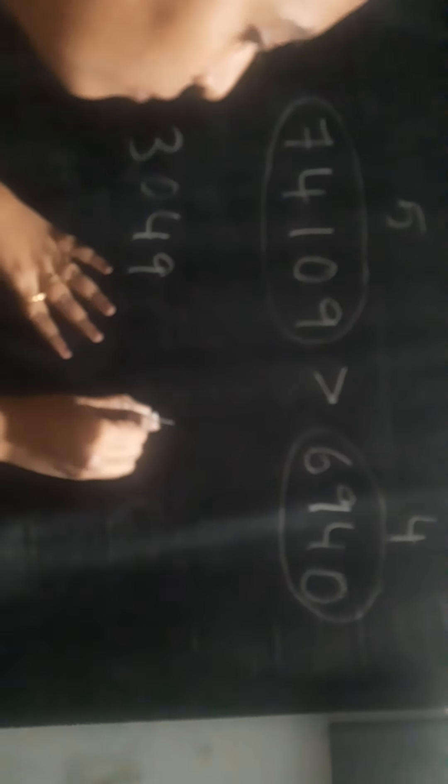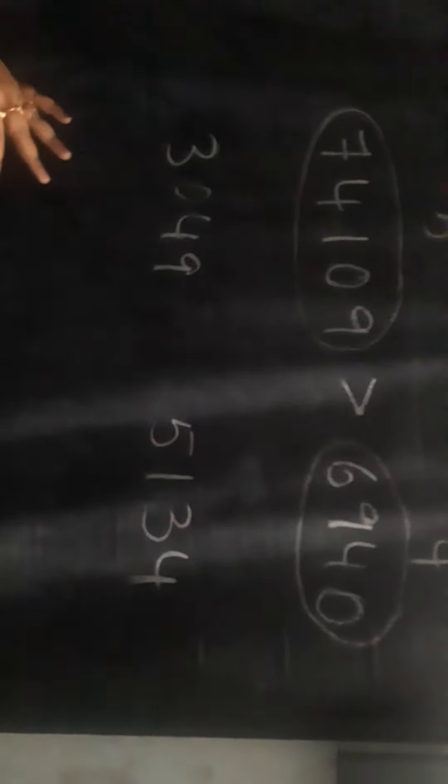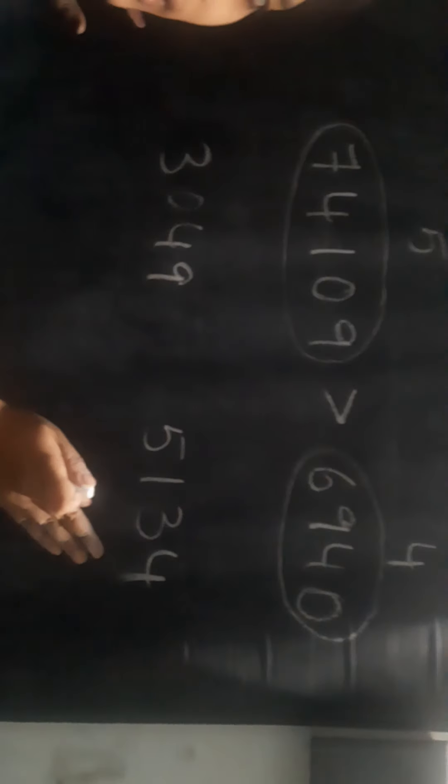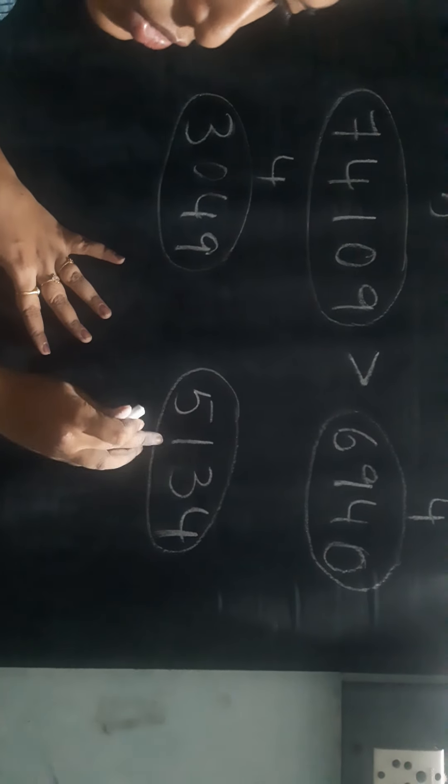Coming to the second example: 3049 and 5134. How are we going to compare these two numbers? First of all, count the number of digits present in these two numbers. Count the number of digits: 1, 2, 3, 4 — 4 digits in this number. Here also, the number of digits is 4: 1, 2, 3, 4.